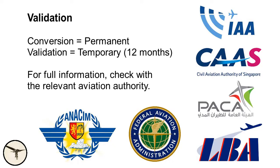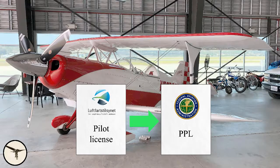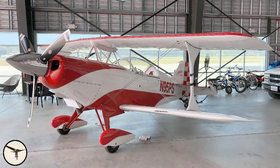A validation is similar to a conversion, but you don't get a permanent license — it is based on your current license and is valid for only 12 months at a time. When it comes to private flight, there is a fast track. ICAO recommends that a pilot license issued by a contracting state should be rendered valid by other contracting states for use in private flights. For example, a friend of mine has an ATPL issued by CAA Norway, a type rating on Boeing for his airline job, and a single engine land class rating. He went to the FAA in the United States and they issued a PPL to him, which he now uses to fly and practice aerobatics.